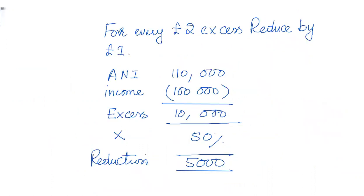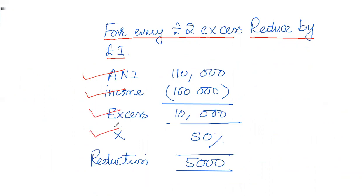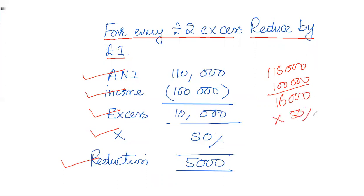The rule of reduction is that for every £2 of excess income above £100,000, there will be a reduction of £1 in personal allowance. So: first, calculate ANI; then compare it with the income threshold of £100,000; find out the excess; and multiply the excess by 50% to get the amount of reduction. For example, if ANI is £116,000, the excess is £16,000, multiplied by 50% gives a reduction of £8,000 from personal allowance.